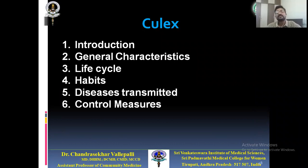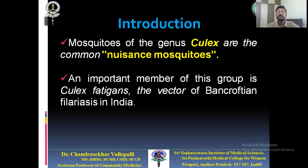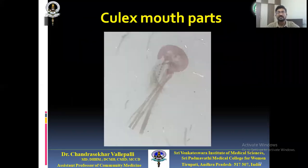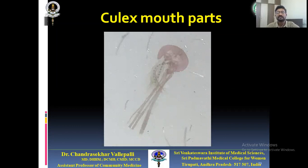We will now move into Culex. We will discuss introduction, general characteristics, life cycle, habits, and diseases transmitted, followed by common control measures for both Anopheles and Culex. Culex mosquitoes are common nuisance mosquitoes. The important member of this group is Culex quinquefasciatus, which is a vector of Bancroftian filariasis in India. The body is divided into head, thorax, and abdomen — similar to Anopheles. The proboscis is slightly different compared to Anopheles.